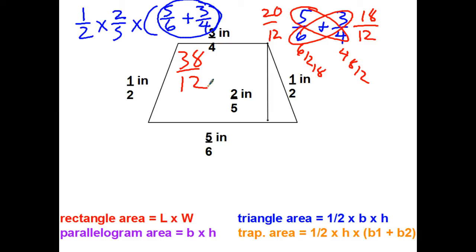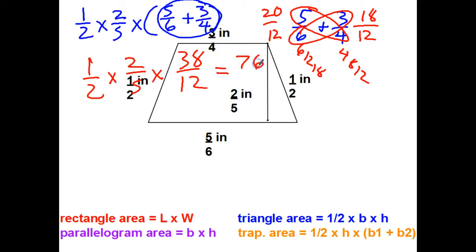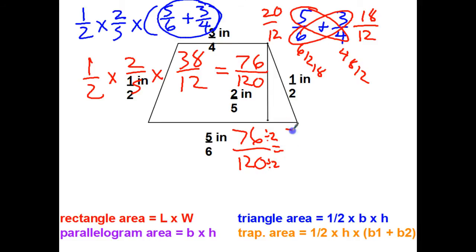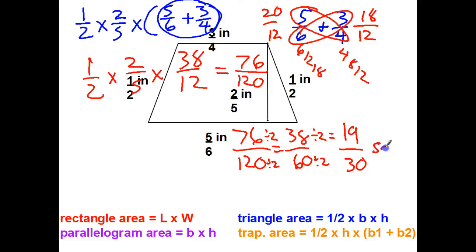If you had cross multiplied, you'd get 76 over 24 — same thing, just needs more simplifying. So now I have one-half times two-fifths times thirty-eight twelfths. Tops: one times 2 is 2, times 38 is 76. Bottoms: two times 5 is 10, times 12 is 120. That gives 76 over 120. Dividing both by 2: 38 over 60. Both still even, divide by 2 again: nineteen-thirtieths square inches.